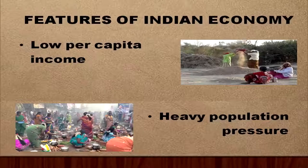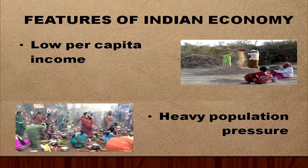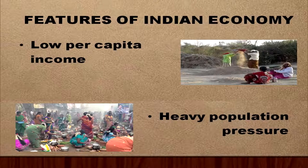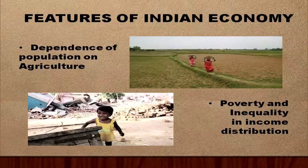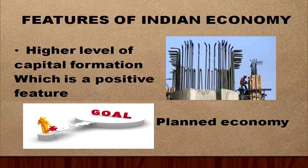Let us now go through the features one by one. The first feature of the Indian economy is that it has a low per capita income. Secondly, there is heavy population pressure. Thirdly, there is heavy dependence of population on agriculture. Fourth, there is poverty and inequality in income distribution. On the positive side, there is a higher level of capital formation, and India is a planned economy with goals to reach.